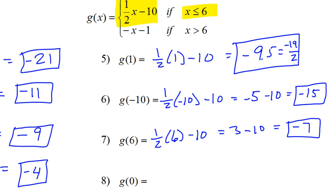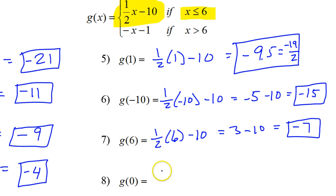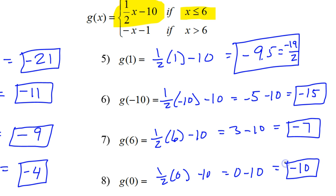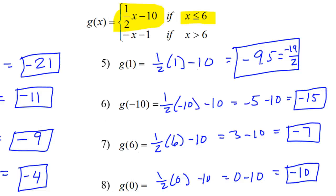Number 8: x equals 0. Is 0 less than or equal to 6? Yes, 0 is less than 6. So we're using the top part of the function: one half of 0 minus 10, which is 0 minus 10, so that is negative 10. That's the answer to number 8. Notice that you don't get two separate answers — you don't evaluate for both pieces. You just evaluate for the one piece that is chosen by the condition.